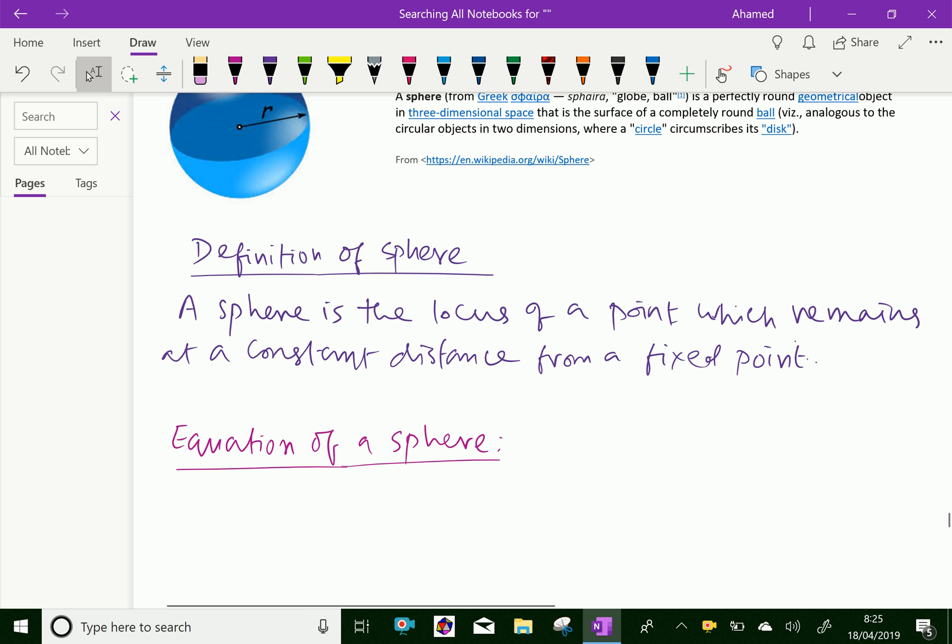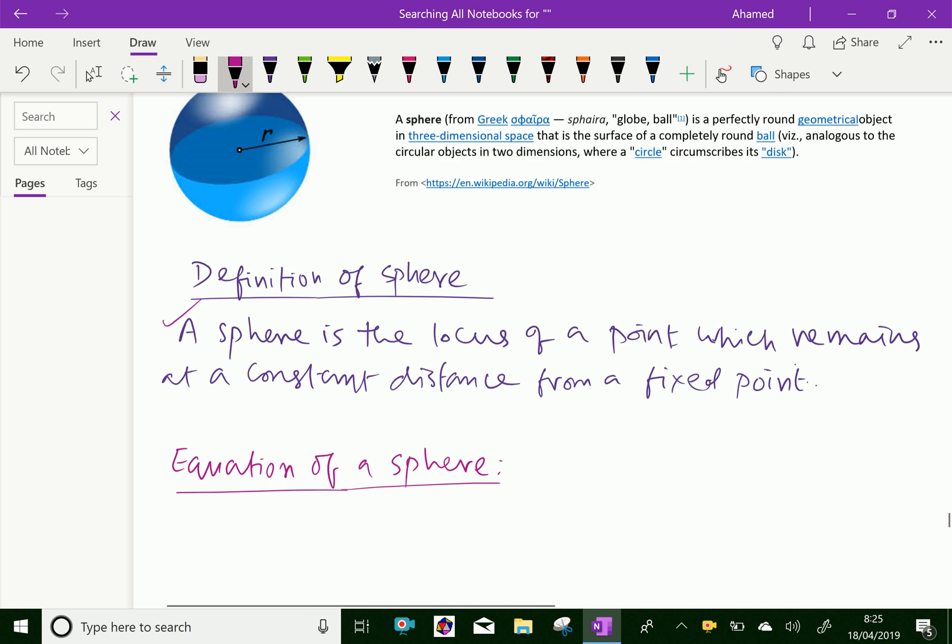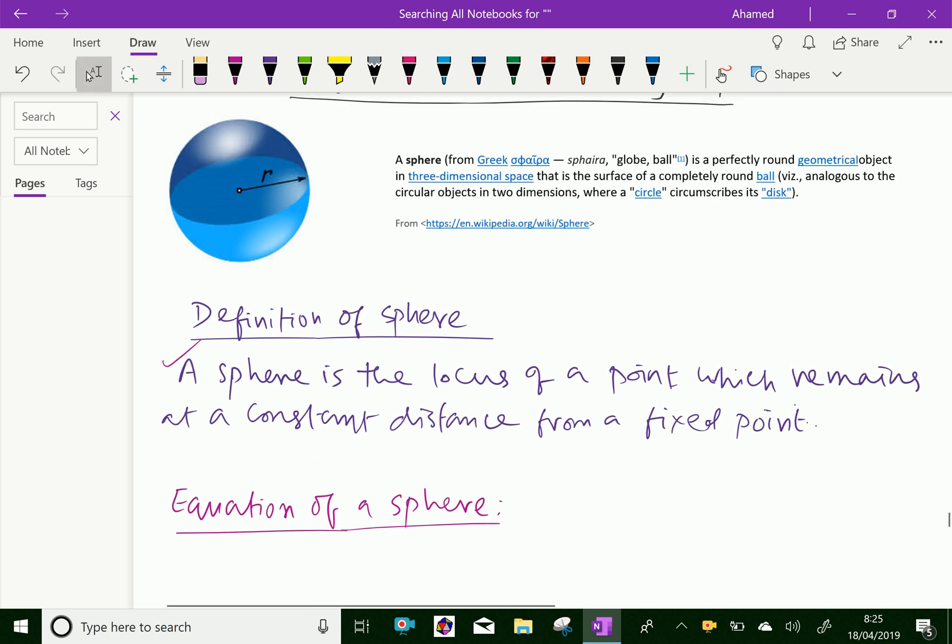Now, we will discuss about definition of a sphere. A sphere is the locus of a point which remains at a constant distance from a fixed point. Suppose in space a fixed point is there. From that fixed point, one more point is moving such that that point is always equal distance from that fixed point. Then that locus of that moving point forms a sphere.